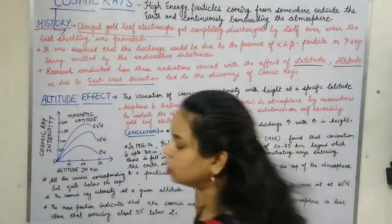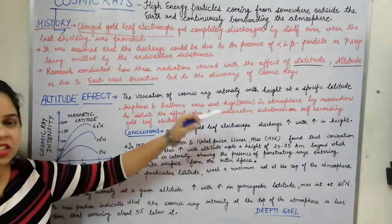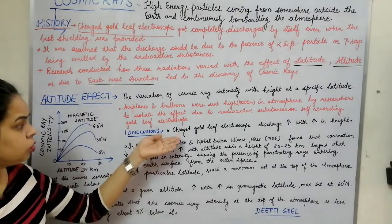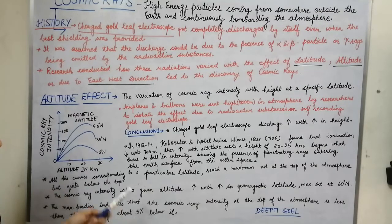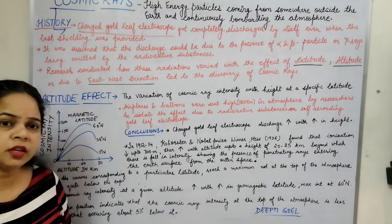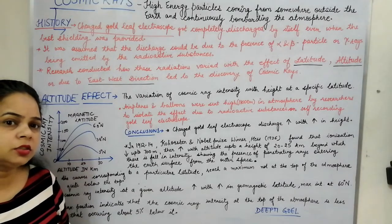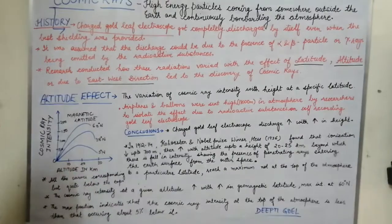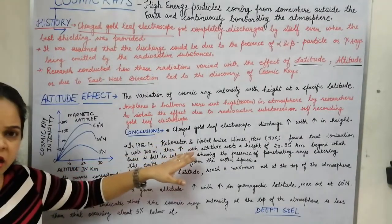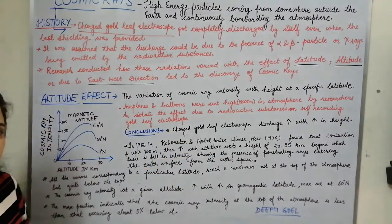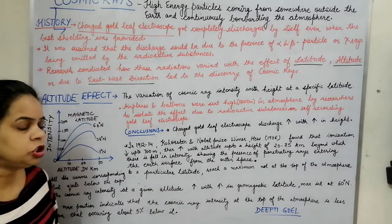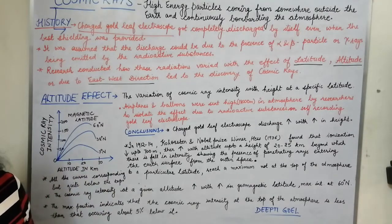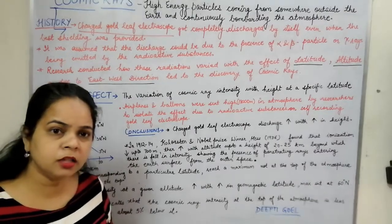They concluded that the charged gold leaf electroscope discharges increased with increase in altitude. In 1912 to 1914, Kohorstel and Nobel Prize winner Hess — who was awarded the Nobel Prize in 1936 for this discovery — found that ionization decreased up to 700 meters, then increased up to a height of 20 to 25 kilometers, and beyond that the intensity again decreased. They showed the presence of penetrating rays coming from outside the Earth's atmosphere and continuously bombarding it.